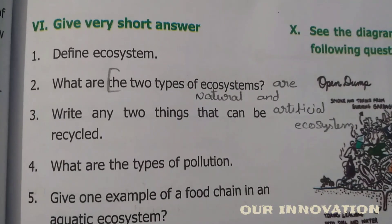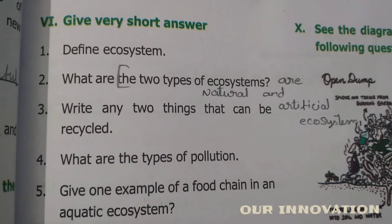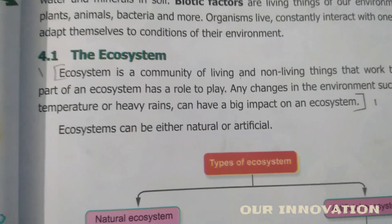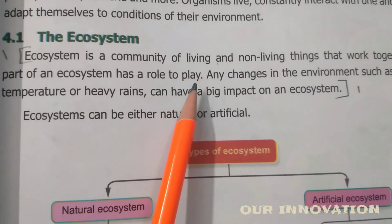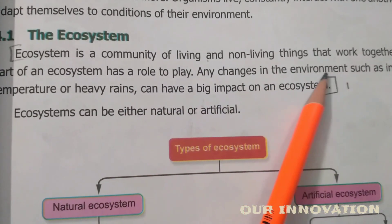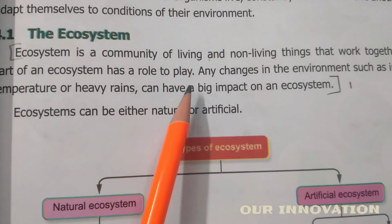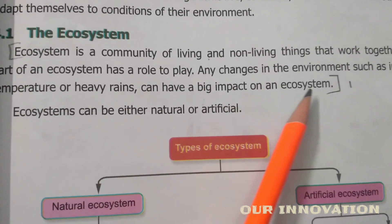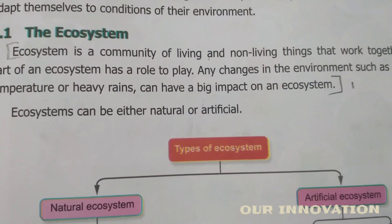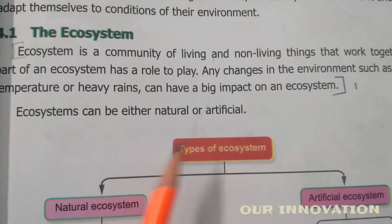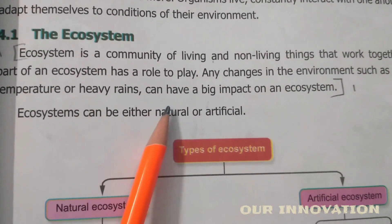Roman numeral six — give very short answers. Define ecosystem. The answer is on page number 47: an ecosystem is a community of living and non-living things that work together. Each part of an ecosystem has a role to play. Any changes in the environment, such as increased temperature or heavy rains, can have a big impact on an ecosystem.